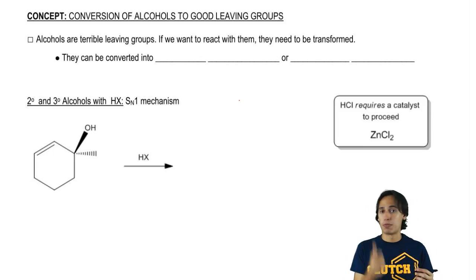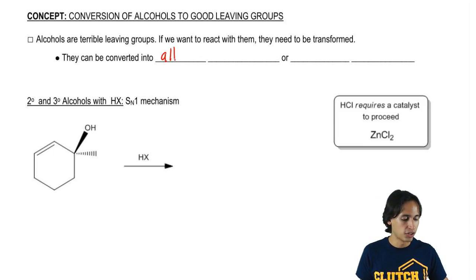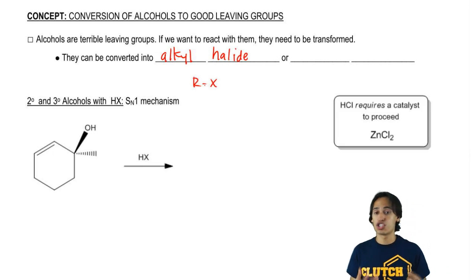The first option that we have is to convert alcohol simply into an alkyl halide. Remember that alkyl halides have the molecular formula Rx. And the reason that they're such good leaving groups is because X negative, once it takes off, is very stable. X could stand for iodine or bromine or chlorine. These are very electronegative atoms that don't mind having a negative charge. So alkyl halides are an awesome option.